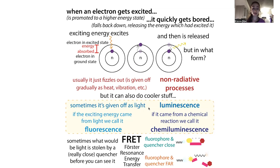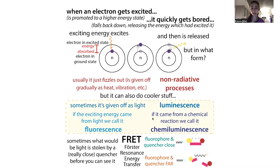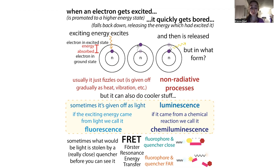Luminescence can come from different sources — such as a chemical reaction, or from making a new molecule with a different floor plan that releases extra energy. Those are examples of chemiluminescence. A specific subset is bioluminescence, where the chemical reactions take place through biochemical methods — like in animals such as jellyfish, or in vitro using reagents like luciferase. Proteins like GFP or YFP are fluorescent, meaning they absorb and give back light.